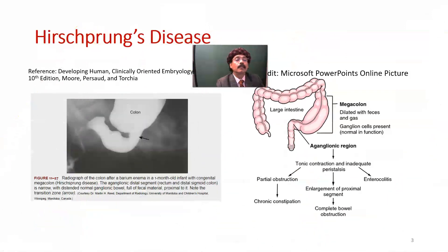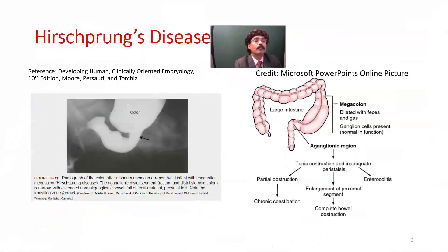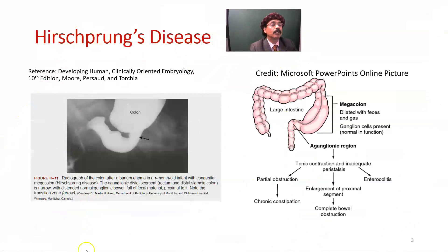Here we are looking at congenital megacolon. There is the aganglionic part. There may be partial or complete obstruction, and there will be chronic constipation, tonic contraction, and inadequate peristalsis. There may also be enterocolitis, which is a devastating condition.